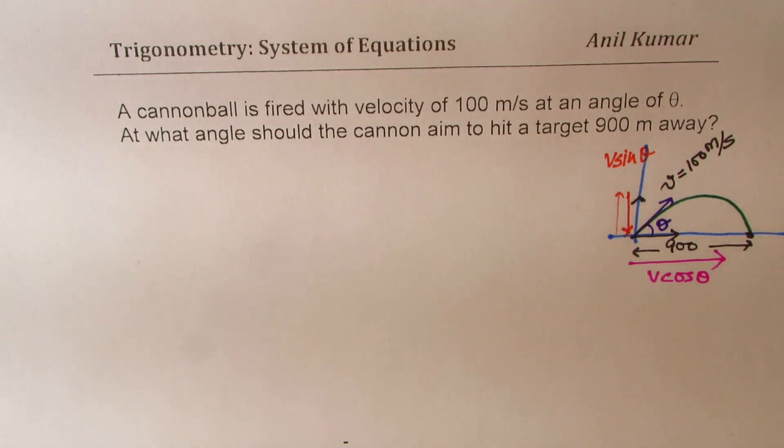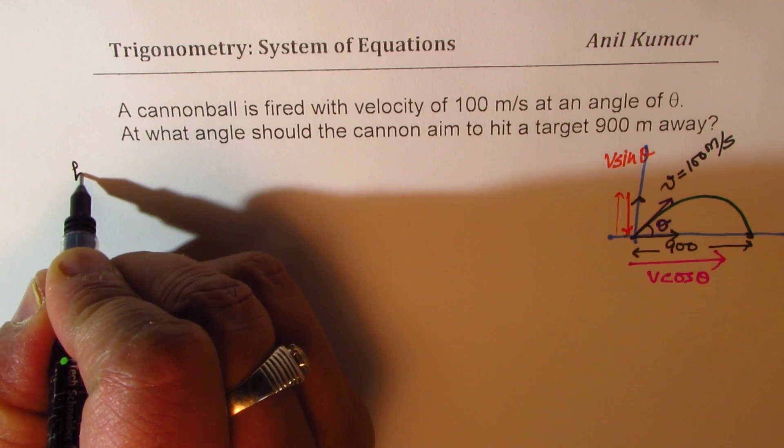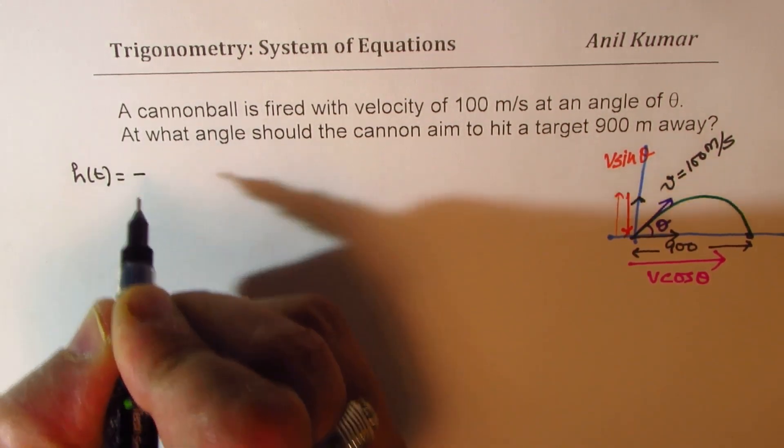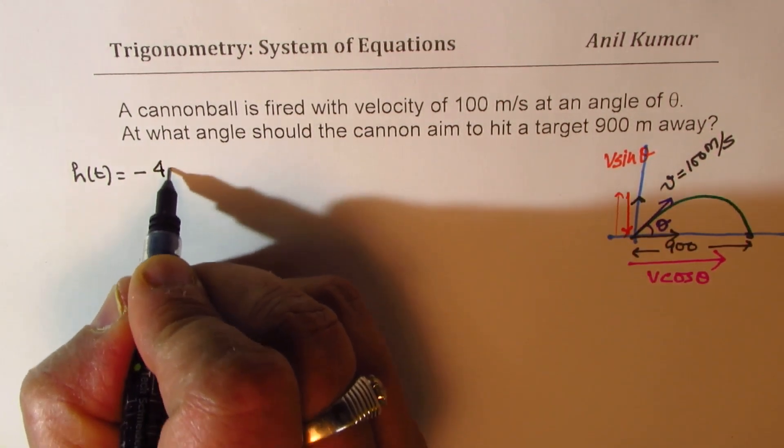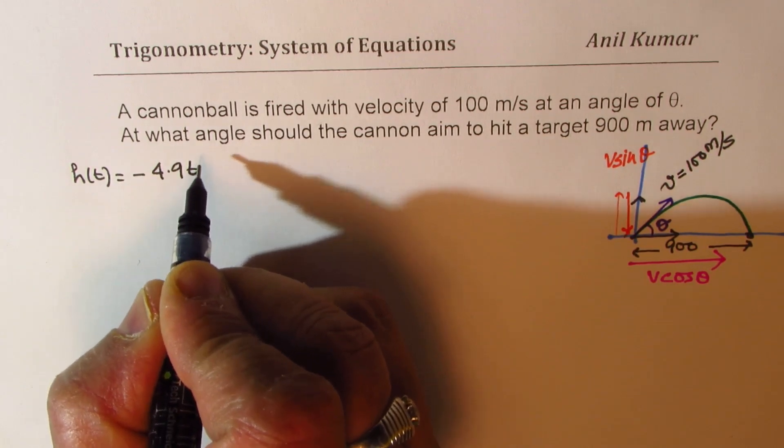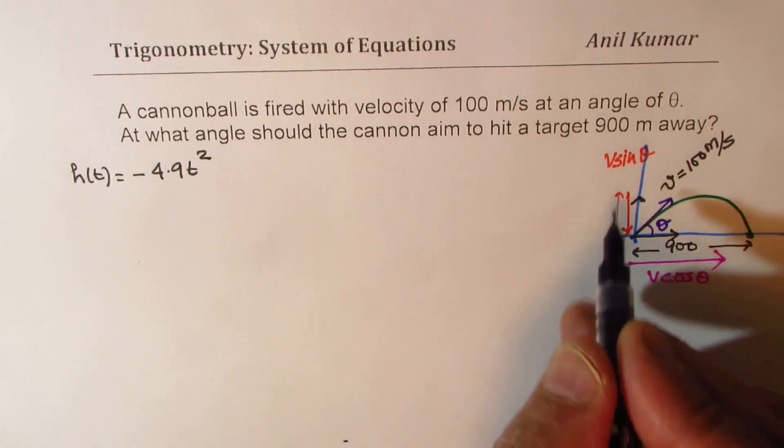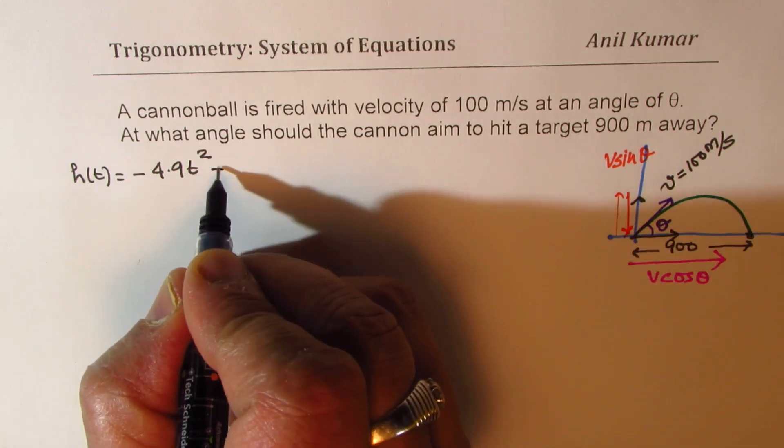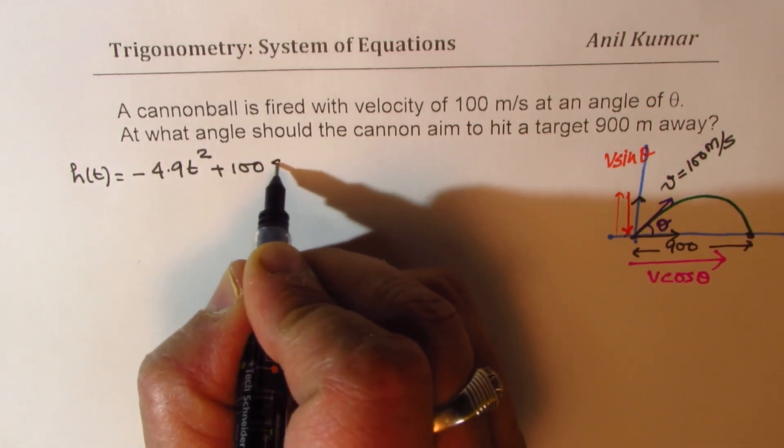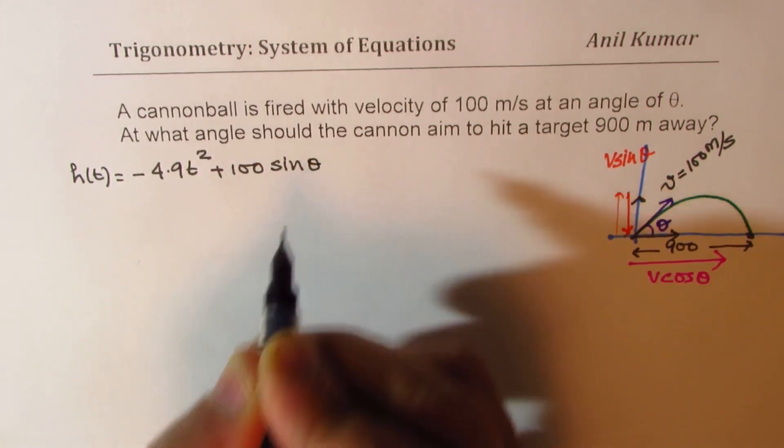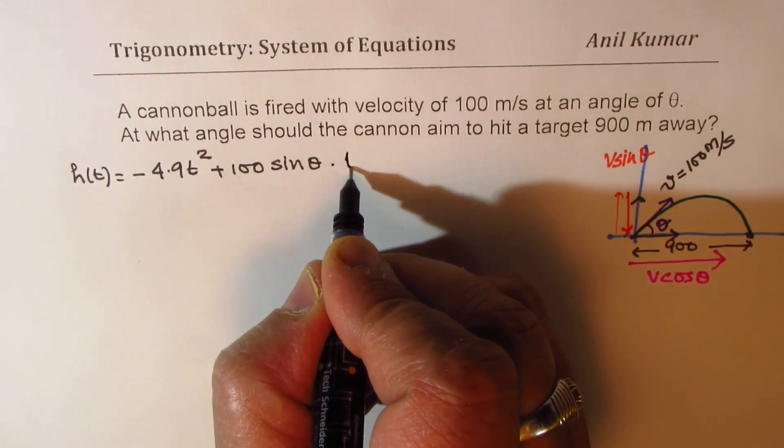Now, based on this, we are going to write two equations. So one of the equations is relating the height. So we can say height is minus 4.9 t squared plus the velocity along the vertical path, which is 100 sin theta, all this times t, right?